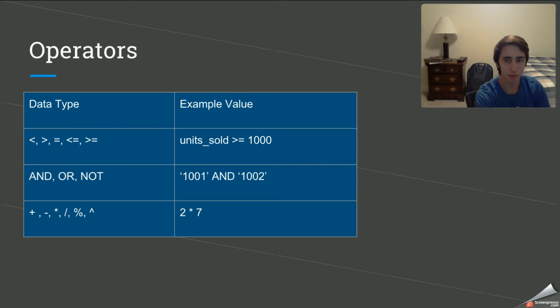And then next up we have the AND OR NOT. So we know how to use the AND and the OR. The NOT works very much the same, where you could say where units sold is not equal to 1,000. And so you could throw that in there as well.